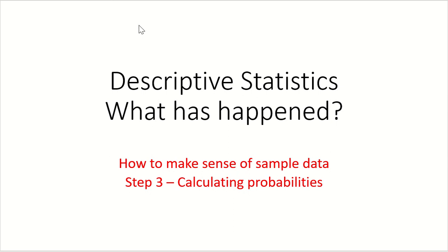We are continuing to talk about descriptive statistics — whether what we have, what we're seeing right now, what's happened in the past, is based on our sample or is it based on reality. What we've done is we've gone in and looked at the normal distribution so that we can remind ourselves that the data that we have is not always exact.